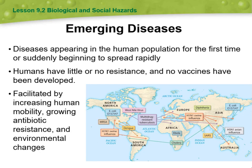Emerging diseases are diseases appearing in the human population for the first time, or suddenly beginning to spread rapidly. Humans have little or no resistance to them and no vaccines have been developed.